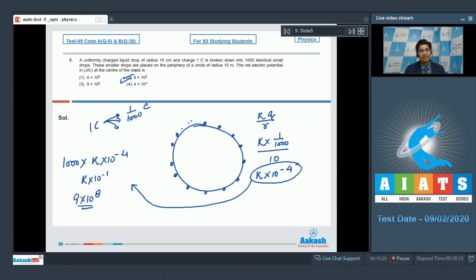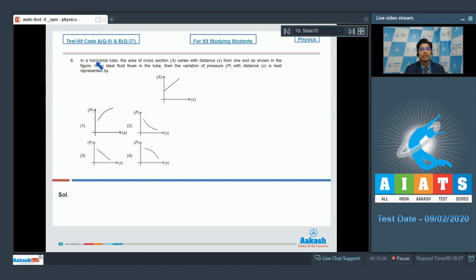Now let us proceed to question number 9. As per question number 9, in a horizontal tube, the area of cross section A varies with distance X from one end as shown in the figure. If an ideal fluid flows in the tube, then the variation of pressure P with distance X is best represented by.